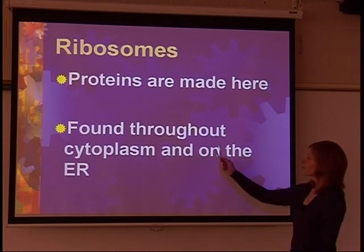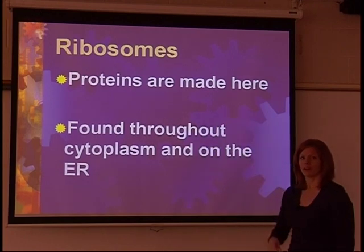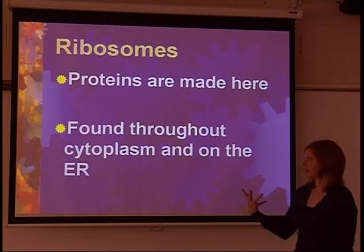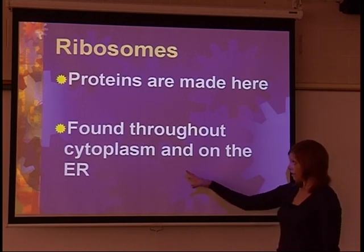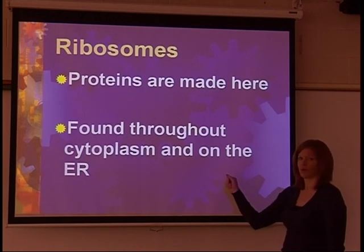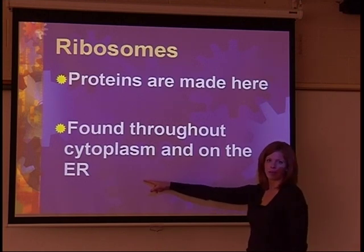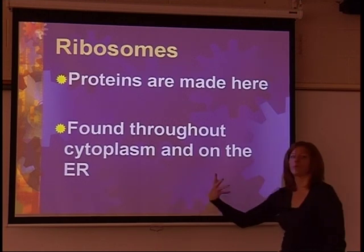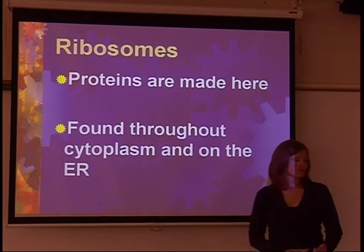We have ribosomes. Ribosomes are where proteins are going to be made in the cell. There's lots of them throughout the cell. They're found in the cytoplasm and also on a structure called the ER, which refers to the endoplasmic reticulum, which we will get to in the next few slides.